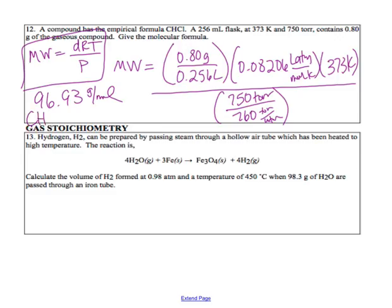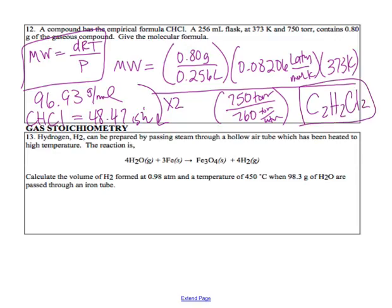Now we have an empirical formula of CHCl and a calculated molar mass of 96.93 g/mol. We find the mass of the empirical formula — about 48.47 g/mol. Dividing 96.93 by 48.47 gives us a multiple of 2. So the molecular formula is C₂H₂Cl₂. Box your final answer.